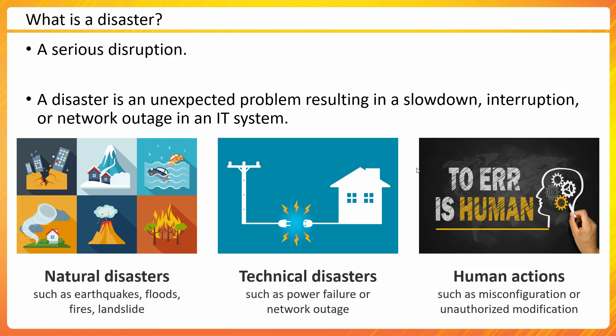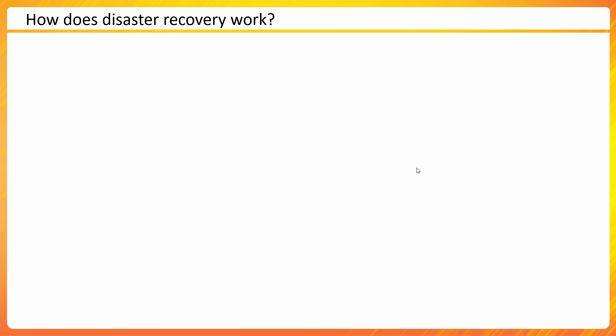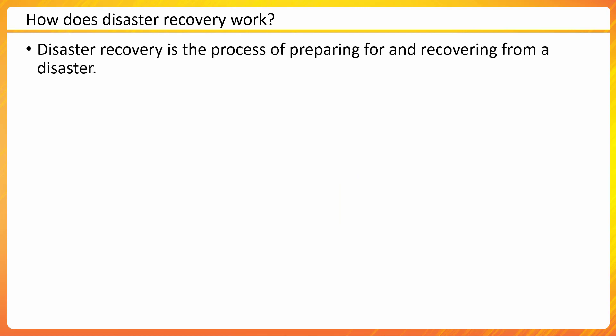We want to focus on how disaster recovery actually works. If I have to explain what the disaster recovery process is, it is basically a process of preparing for and recovering from a disaster. Obviously you can't recover without being prepared for it. Like you keep a spare wheel in your car — you're preparing to mitigate that disaster when it happens.